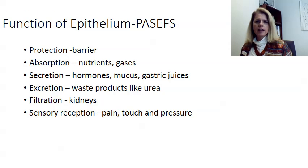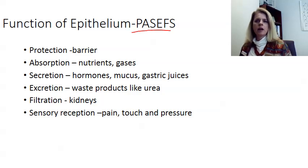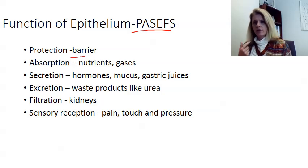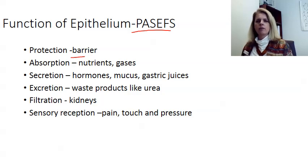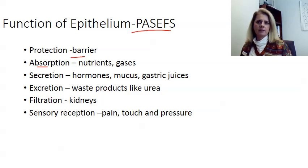The generalized function of epithelia can be memorized by using the word PASSIVES. For protection, they make a barrier — your skin is a barrier for your body, and the inside of your mouth protects the underlying surfaces. Absorption: your epithelial layers allow you to absorb things like nutrients and gases. Think of your small intestines for nutrients and your lungs for gases.